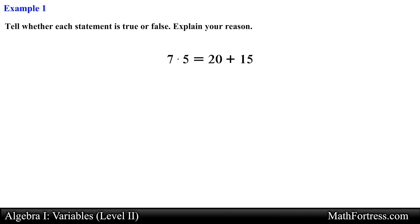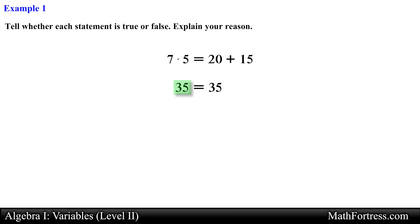7 times 5 is equal to 20 plus 15. The first thing we need to do is simplify each side of the expression to be able to compare them. The left-hand side simplifies to 35 and the right-hand side simplifies to 35. Since 35 is equal to 35, this is a true statement.